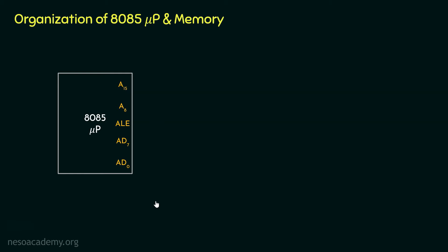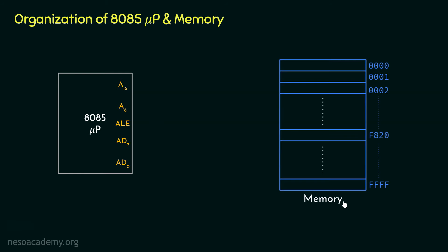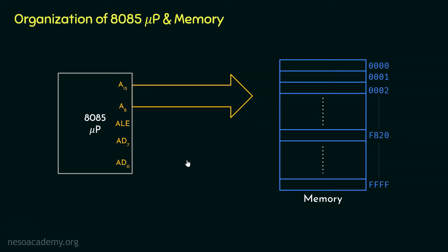In the previous session we were introduced to the memory associated with the 8085, and learned that to address memory locations we use hex codes from four zeros to four F's. The pins A15 to A8 are the higher order address bus and are unidirectional. On the other hand, due to multiplexing, AD7 to AD0 are bidirectional — for addresses they are unidirectional pointing towards memory, but since data also flows through these buses, they are bidirectional overall.